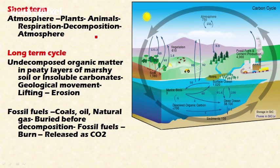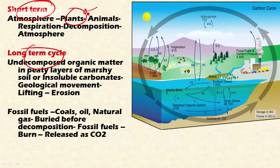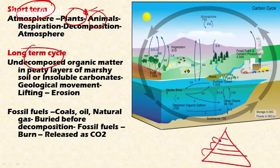The carbon cycle is carried out in two ways: a short-term carbon cycle and a long-term carbon cycle. In the short-term carbon cycle, atmospheric carbon dioxide is fixed by plants through photosynthesis and stored in plants in the form of carbohydrates. This stored food is then utilized by primary consumers — the next trophic level after autotrophs — who use plant material as food.